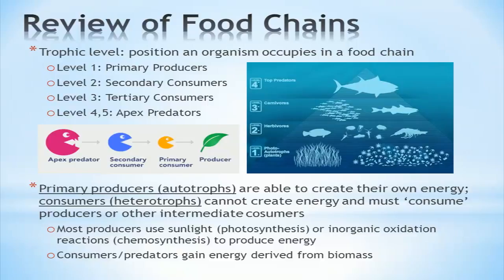There may be more levels between primary producers and apex predators depending on the complexity and diversity of the environment. Organisms may be more broadly classified as primary producers or as consumers. Primary producers, also called autotrophs, are able to create their own energy. Consumers, also called heterotrophs, derive their energy by consuming producers or other intermediate consumers.